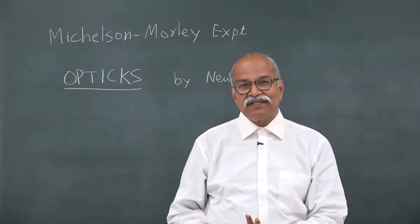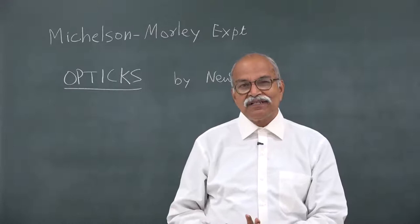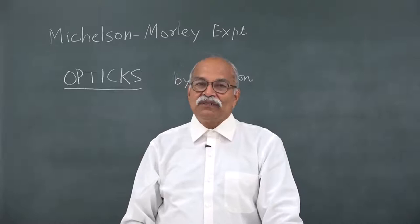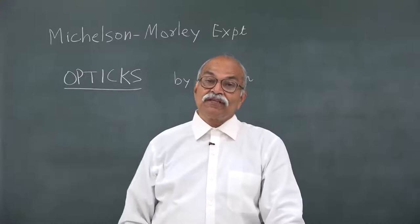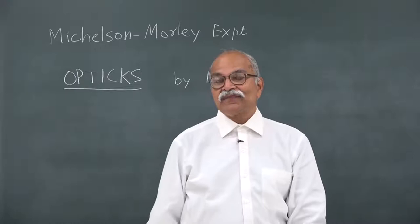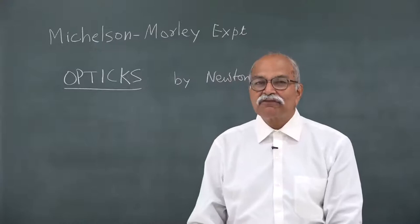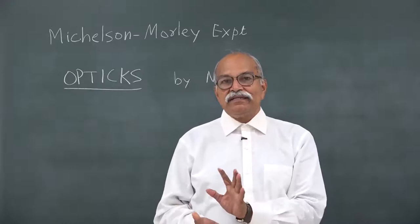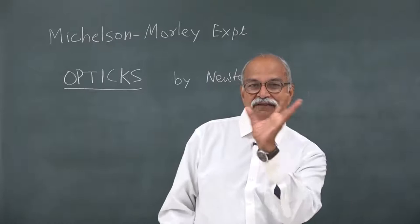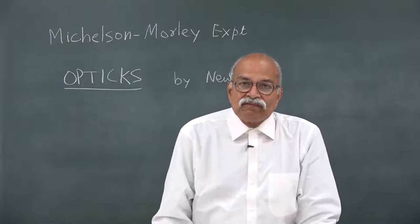Contemporary to Newton was Christiaan Huygens, who looked at these experiments in a very different way and proposed that light should be a wave. There was no exclusive experiment to decide whether it was wave or particle until the beginning of the 19th century, when Thomas Young came up with the double slit experiment and showed the interference of light. Combined with many other experiments — speed of light in water being less than in vacuum, and experiments by Fraunhofer and Fresnel on diffraction — by around 1801 to 1805 it was established that light is a wave.